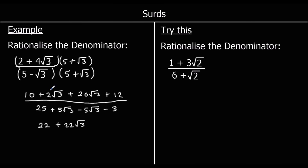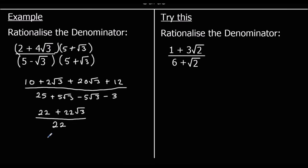So we've got 22 plus 22 root 3 over 22. I can simplify this by dividing both terms on the top by 22. 22 over 22 is 1, and 22 root 3 over 22 is just root 3. So the simplified answer is 1 plus root 3.